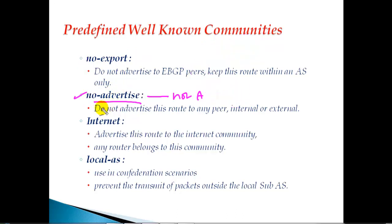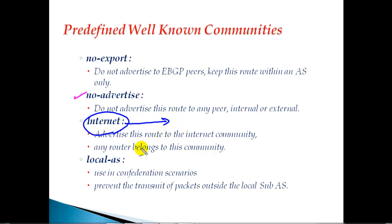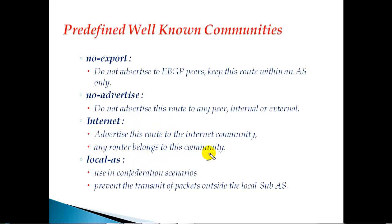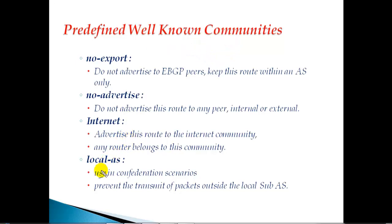The next attribute is internet. Internet is the default community attribute - by default it will advertise to each and every router, both internal BGP and external BGP. Any router by default belongs to this community because BGP, when it receives any route, will by default advertise it to any router whether internal or external.